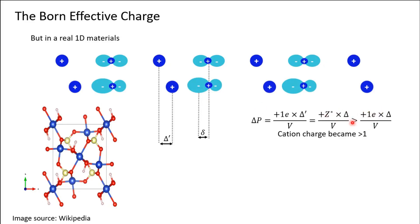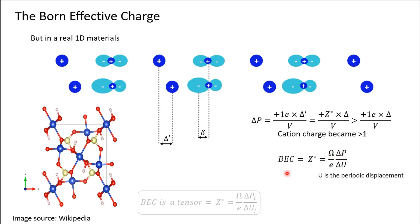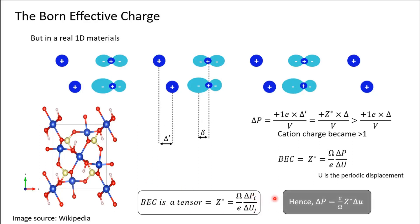This delta-dash polarization is given by the electronic charge multiplied by the certified displacement divided by the volume. Comparing with the previous displacement delta, we can say this charge has increased due to the distortion of the electronic charge distribution. So the Born effective charge Z* is greater than the real charge. The Born effective charge is defined as the change in polarization over the change in displacement per unit volume divided by the electronic charge. In 3D materials, this is actually a tensor: displacement in the j-direction can cause polarization in the i-direction.